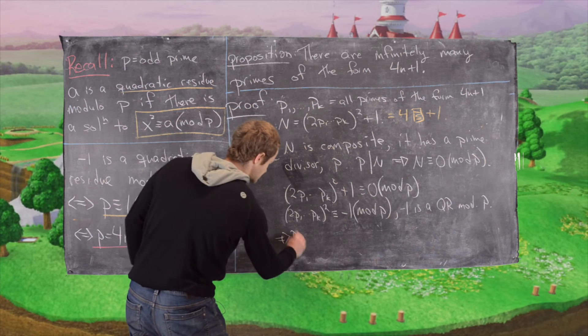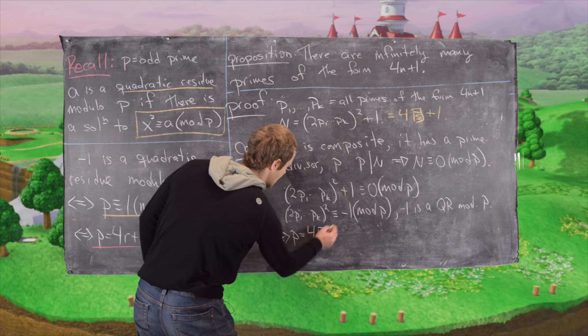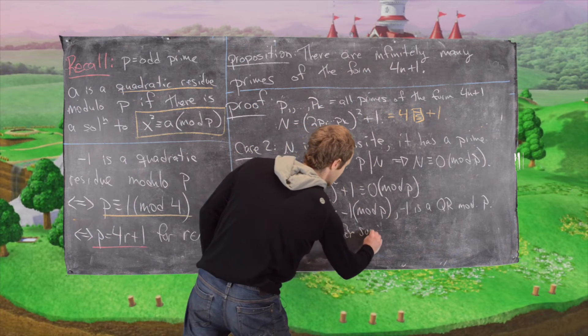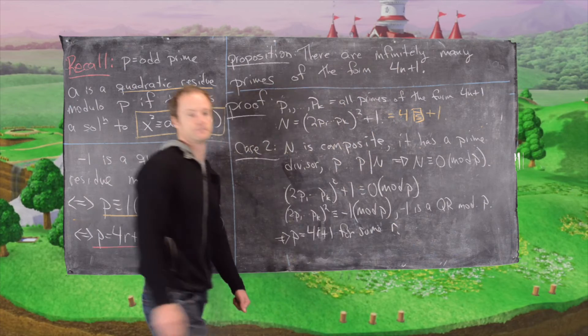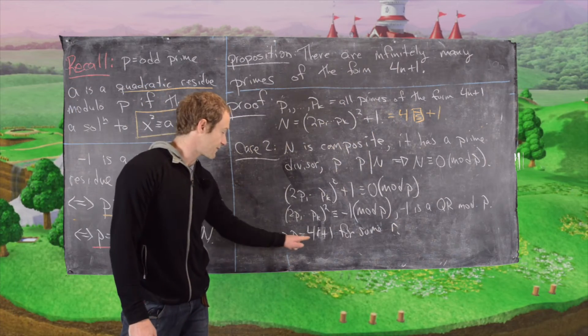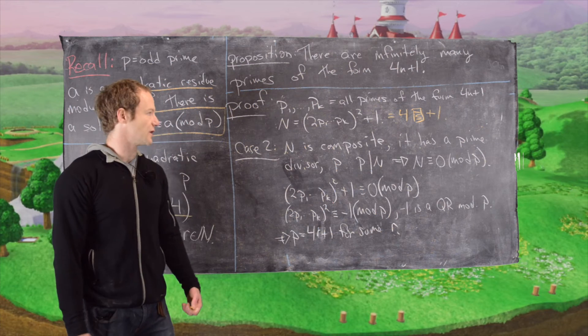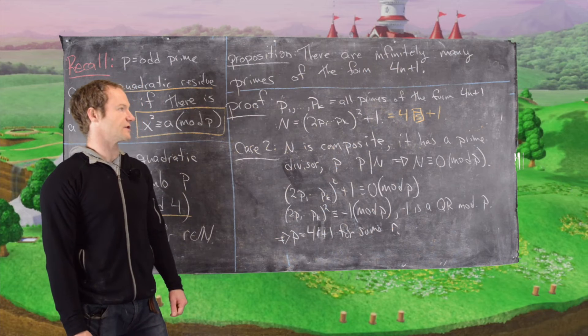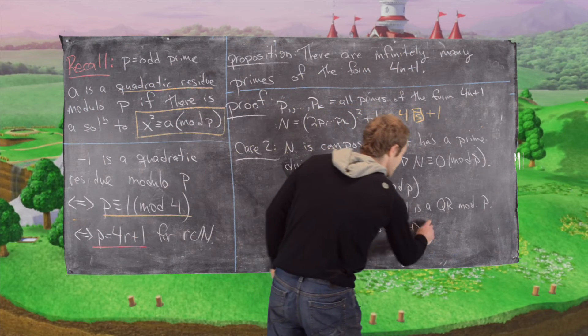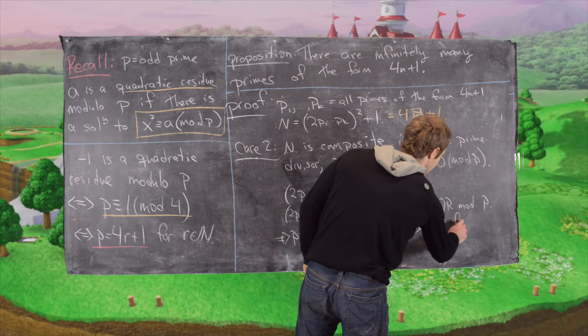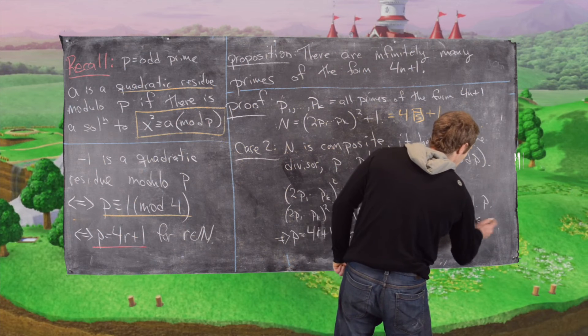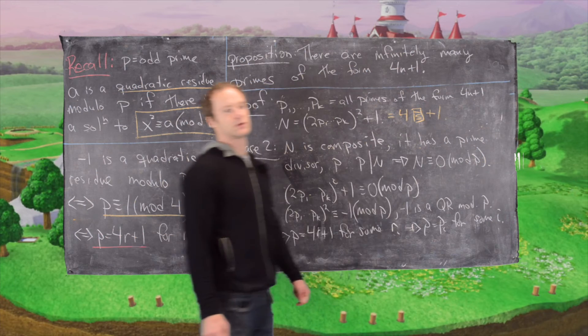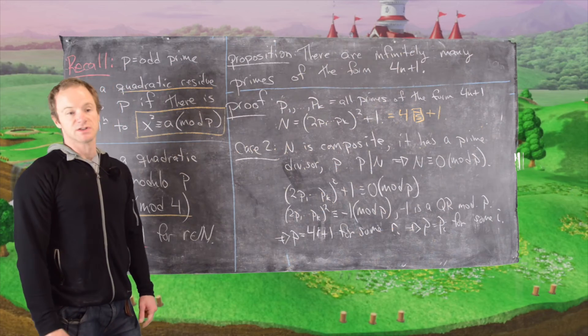So negative 1 is a quadratic residue mod p, which tells us that p equals 4 times r plus 1 for some r. But notice p is a prime of the form 4r plus 1, and p1 to pk are all of those primes. So that tells us that p equals pi for some i between 1 and k.